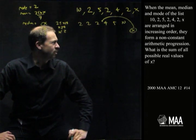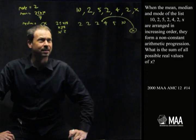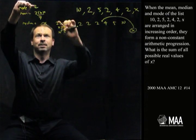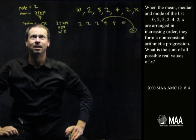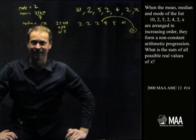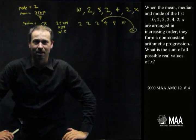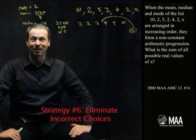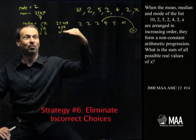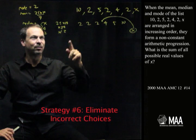Alright, what was the question? What is the sum of all the possible real values of x if these numbers, 2 and this average and whatever this one turns out to be, are an arithmetic progression? I'm feeling stuck. Alright, well it's very clear I've got different cases in this problem. So I'm going to employ strategy number 6, which is to eliminate incorrect choices. I'm going to go through all these possibilities and see if I'm going to eliminate any.